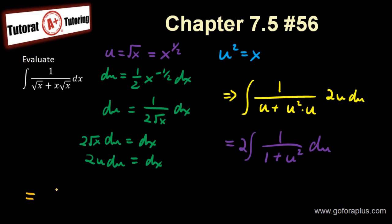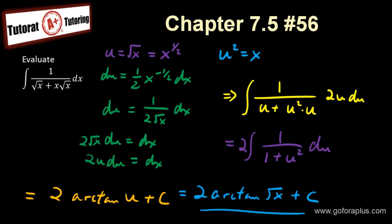So if I write this as the answer, my answer here is going to be 2 times arctangent, because a is 1. So I have a 1 in front. And I have u and then plus c. But what is u? U is really square root of x. So I can just rewrite this as my final answer, 2 arctangent square root of x plus c. And this is my final answer for this question.